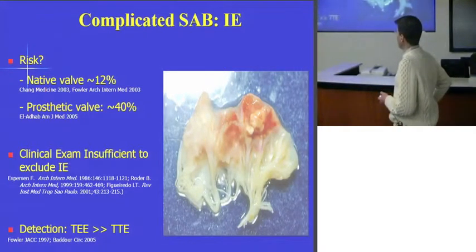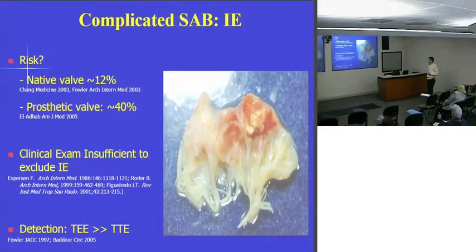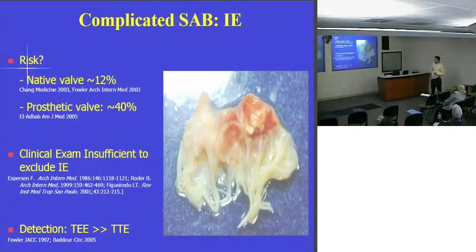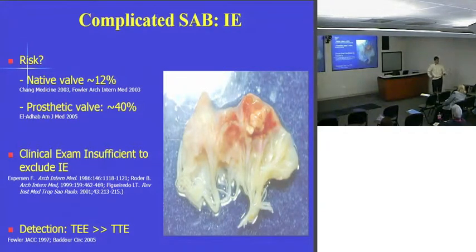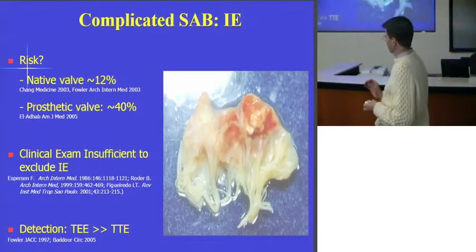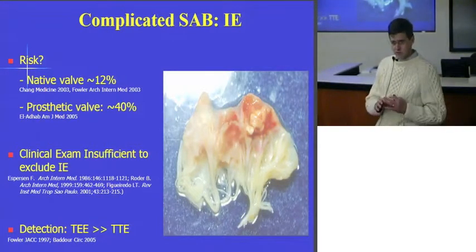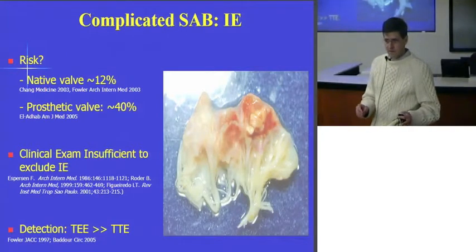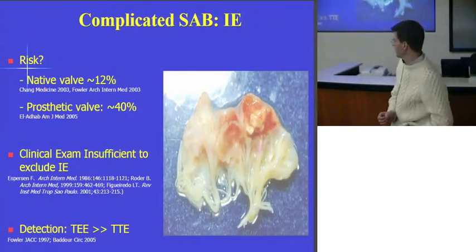If they have a native valve, just the fact that they have staphylococcal in their blood — without actually seeing the patient — their risk of endocarditis is about one in eight, about 12%. That's been reported over and over. If you have a prosthetic valve and staphylococcal in your blood, the rate of that valve being infected is almost half — it's 40%. Absence of proof doesn't equal proof of absence. Clinical exam is not sufficient to rule it out. You can have a normal exam and still have endocarditis.